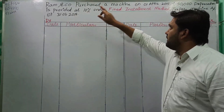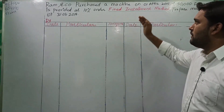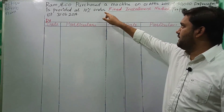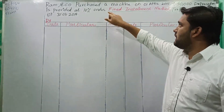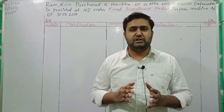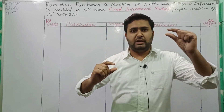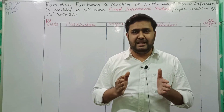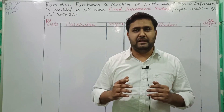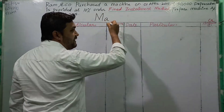Ram and Company purchased a machine on 1st April 2015. The cost price of the machine is 50,000. The rate of depreciation given in the problem is 10%. We have to calculate depreciation under the fixed installment method, which is also known as the straight line method, original cost method, or equal installment method — all are the same. In this method, the depreciation remains constant every year. We are now preparing the machine account.